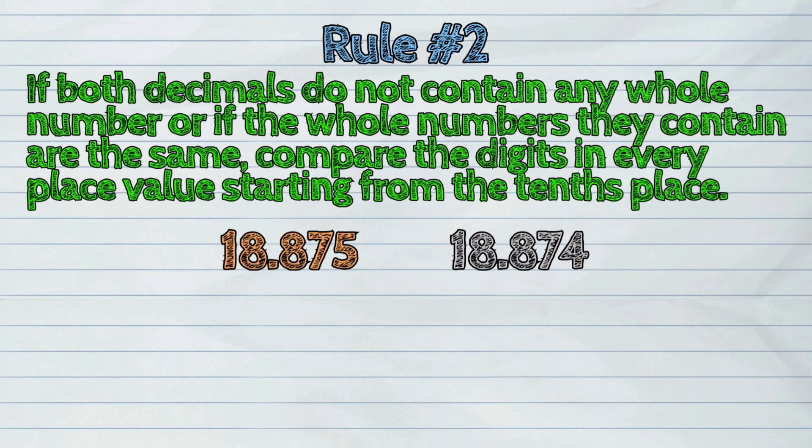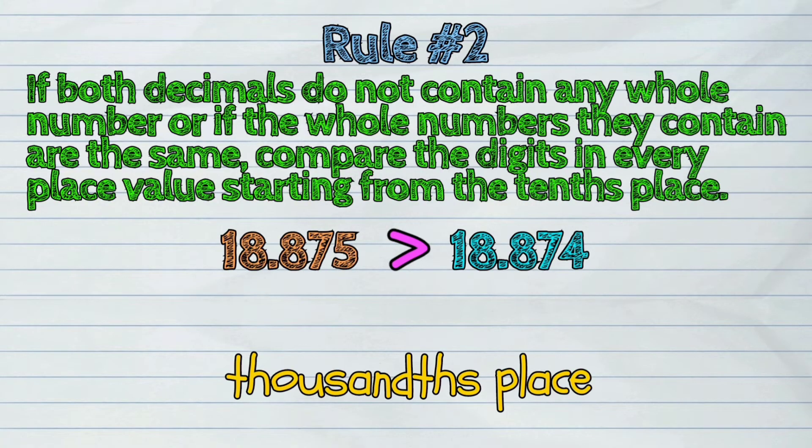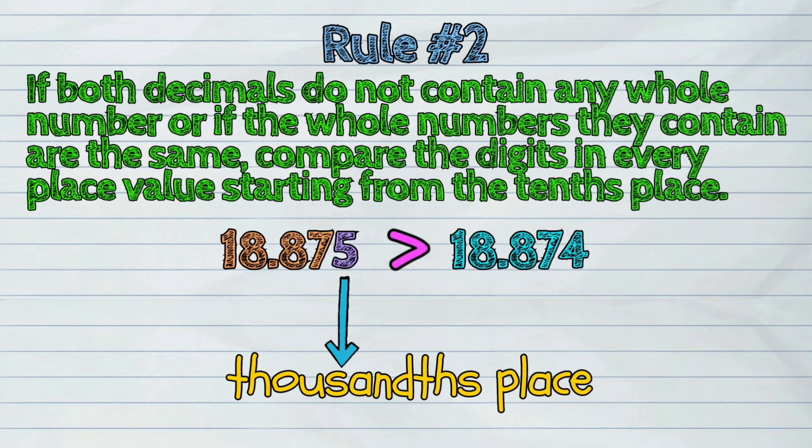18 and 875 thousandths is greater than 18 and 874 thousandths because, in this case, we are comparing the value in their thousandths place. 5 thousandths here is greater than 4 thousandths.